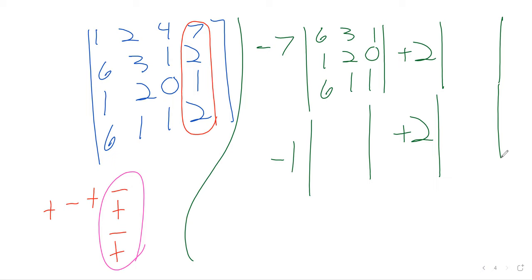In practice, I would never compute by hand a determinant of a matrix bigger than 3×3. And really, I'd avoid computing determinants if at all possible. Even a computer would be chugging for days if you have, like, a 50×50 matrix using this method. Computers can approximate determinants using better algorithms, but doing this by hand is not feasible when matrices get big.